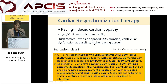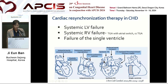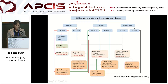CRT has been shown to promote reverse ventricular remodeling. Class I indication of CRT includes: adult with congenital heart disease, systemic LV ejection fraction less than 35%, sinus rhythm with wide QRS complex more than 150 ms with complete LBBB morphology, and NYHA functional class 2 to 4. CRT in adult congenital heart disease has been evaluated in the setting of systemic LV failure, systemic RV failure, and functional single ventricle. This algorithm shows CRT indications in various states.